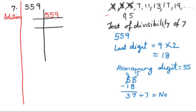So what is the test of divisibility of 7? Take the last digit, multiply it by 2. Whatever answer you get, subtract it from the remaining digits — that is, leaving the last digit, whatever is remaining. After subtraction, check whether that number is divisible by 7. If it is divisible by 7, then the given number is also divisible by 7. If not, then the given number is also not divisible by 7. Therefore 559 is not divisible by 7.